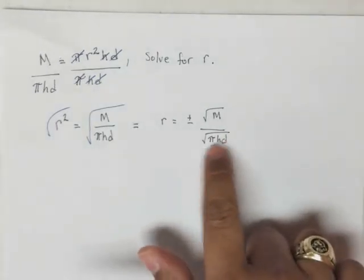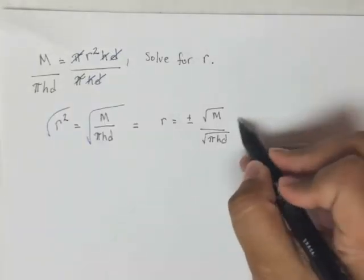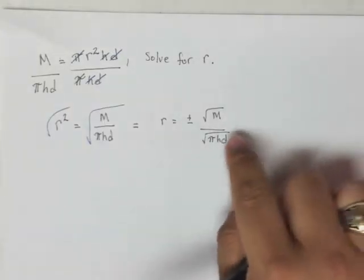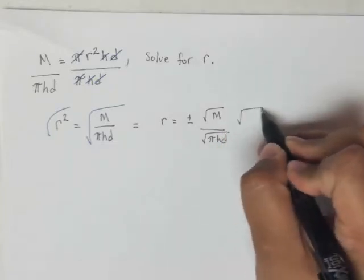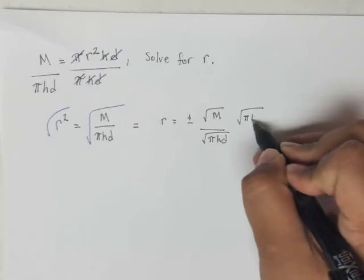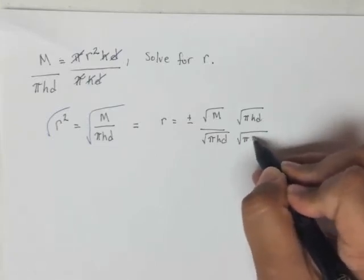Which is no square roots in the denominator. So what we do is we rationalize the denominator. And what we do by that is multiply the top and the bottom of this fraction here by the denominator. So πhd and πhd.